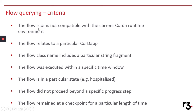You can query for flows that have a particular state, like hospitalized, active, or killed. You can even query for unfortunate cases where a flow on your node is not compatible with the current runtime your Corda node is running. And of course you can combine all of these criteria to get fairly specific information on a subset of the flows running on your node.